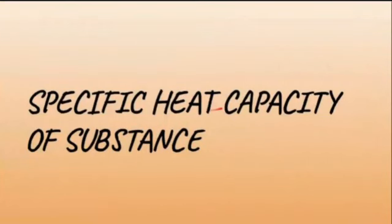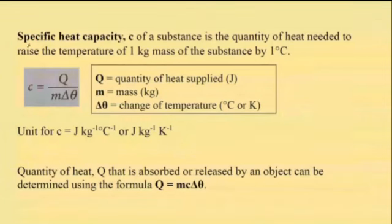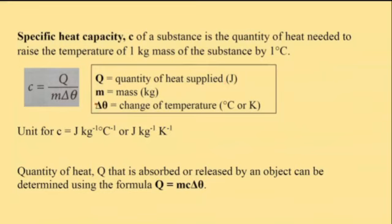The specific heat capacity of a substance is the quantity of heat needed to raise the temperature of one kilogram mass of the substance by one degree Celsius. This is the formula for specific heat capacity, where Q is quantity of heat supplied in Joules, m is mass in kilograms, and delta theta is change in temperature in degree Celsius or Kelvin. The unit for specific heat capacity is Joules per kilogram per degree Celsius or Joules per kilogram per Kelvin. The quantity of heat Q absorbed or released by an object can be determined using Q equals mc delta theta.